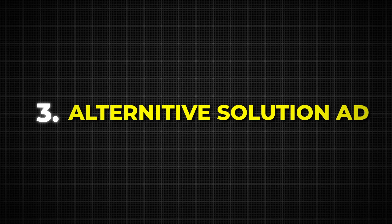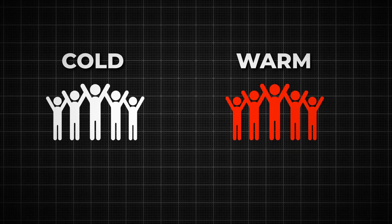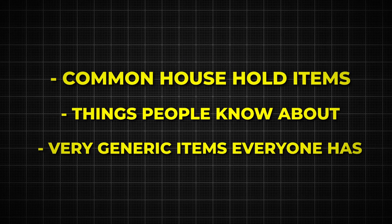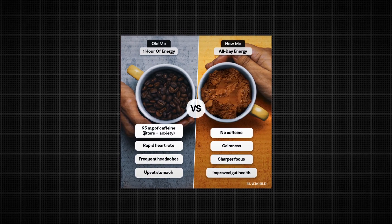Number three is an alternative solution ad. This creative works great for cold and warm audiences. Our goal with this ad is to show customers why and how we're better than the alternative solution. The key for using this ad is to strike controversy with the comparison images. Make sure that the alternative products you are comparing to are common household items or products that most people already know about. In this example ad, you'll see Black Gold comparing themselves to coffee.